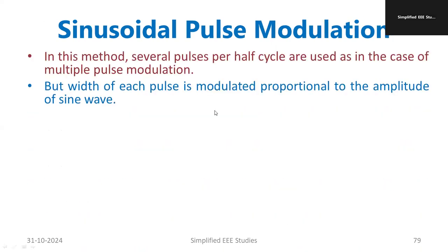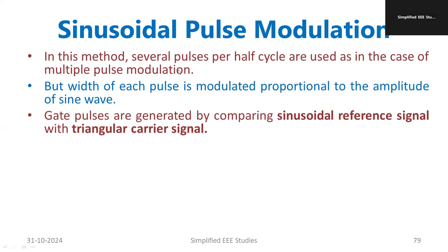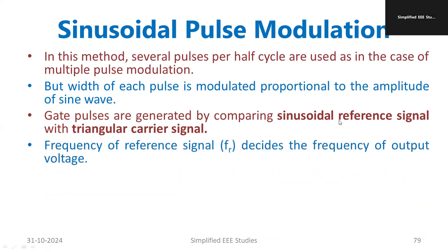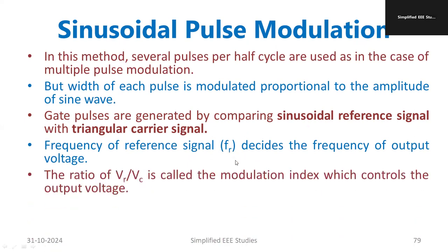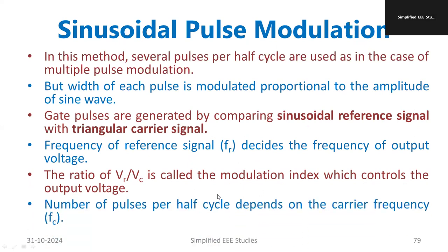In this method, several pulses per half cycle are used, and a sinusoidal signal is taken as the reference. The reference signal frequency is fr. If you take the ratio of the reference signal voltage to the carrier signal voltage, that is called the modulation index. The frequency of the carrier signal is fc.